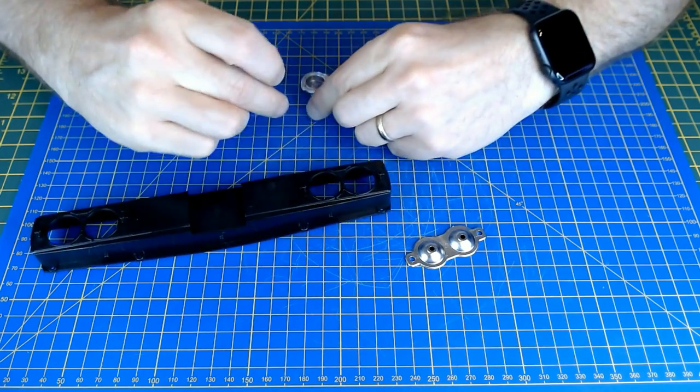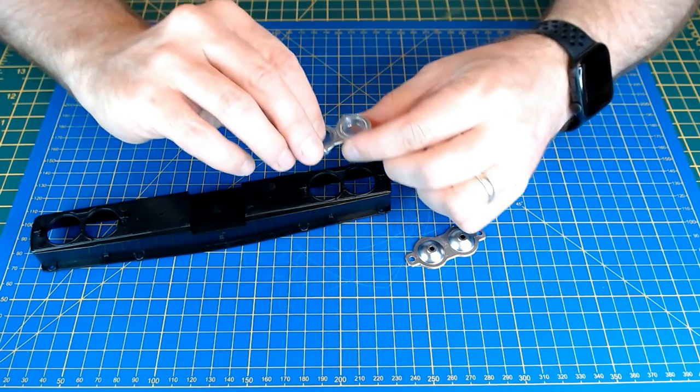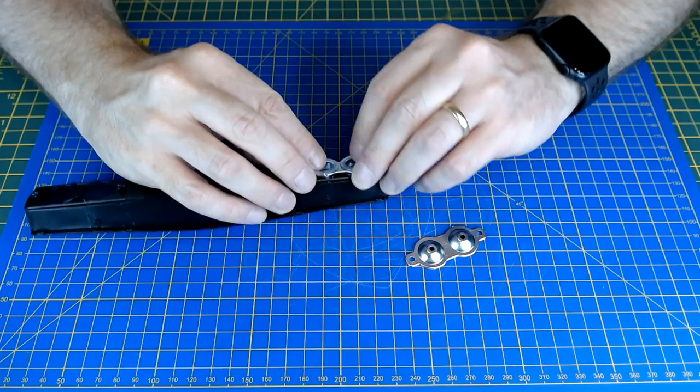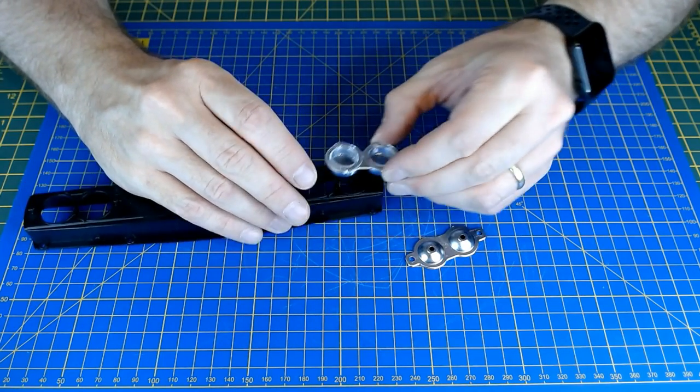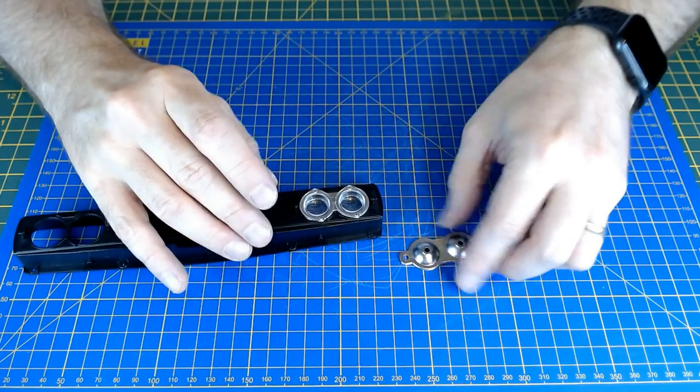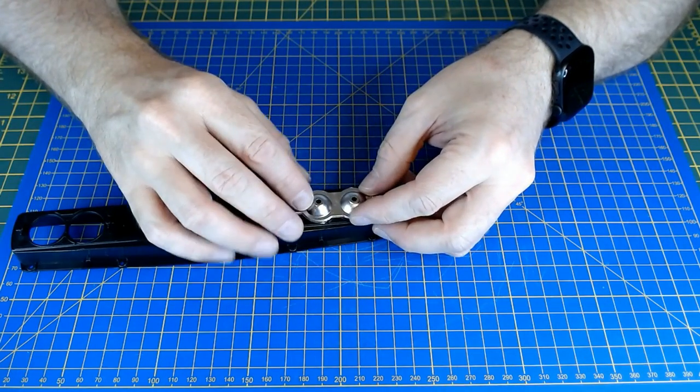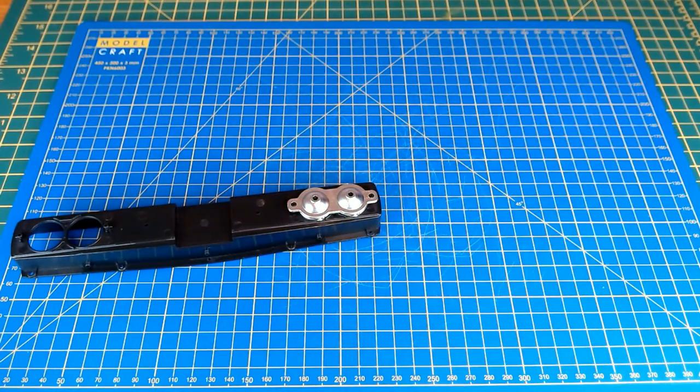Has that got a particular way around it goes? I'm checking all this to make sure I'm getting it the right way around. Because that won't fit that way, it'll only fit one way. And yep, two BP screws.